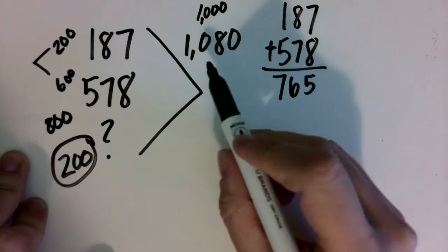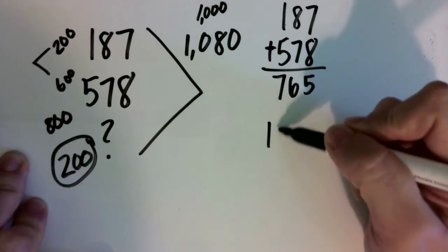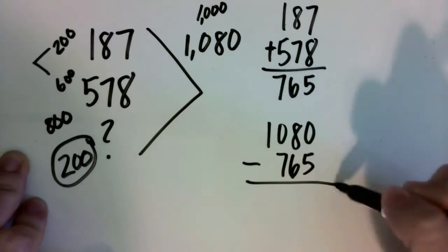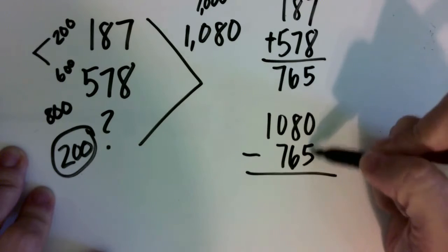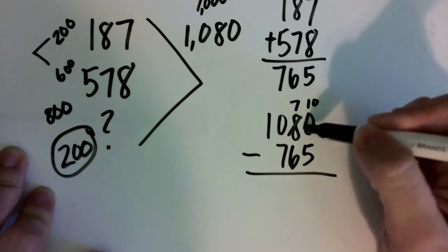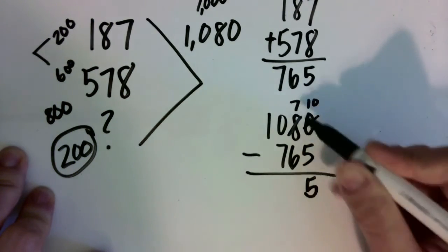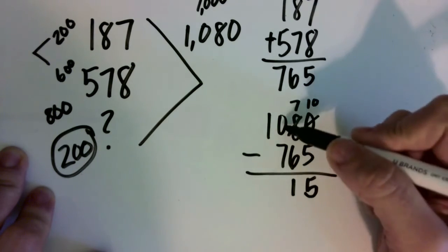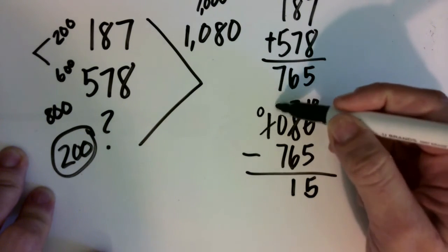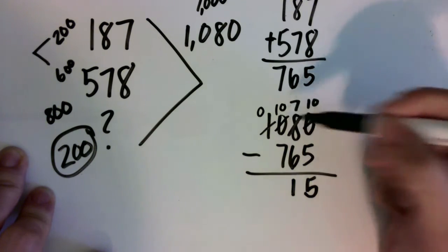I'm going to take this amount from the total to find my missing piece. Subtract. Can't take 5 away from 0. Come to my 10s. Regroup to 10 ones. 7 minus 6 is 1. Can't take 7 away from 0. Come to my 1000s. Make that 10 hundreds.